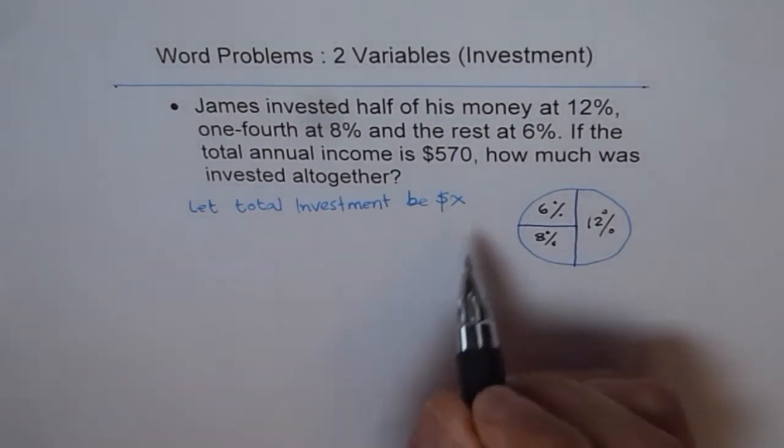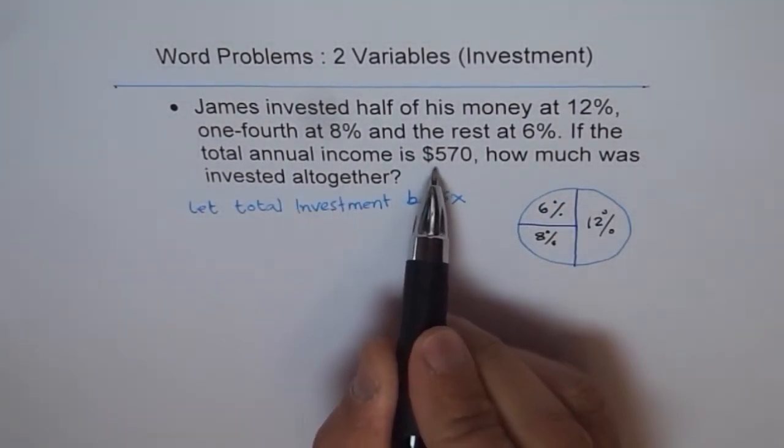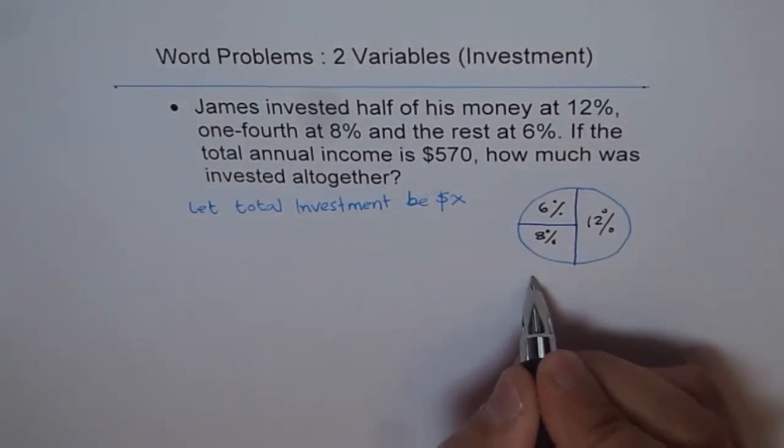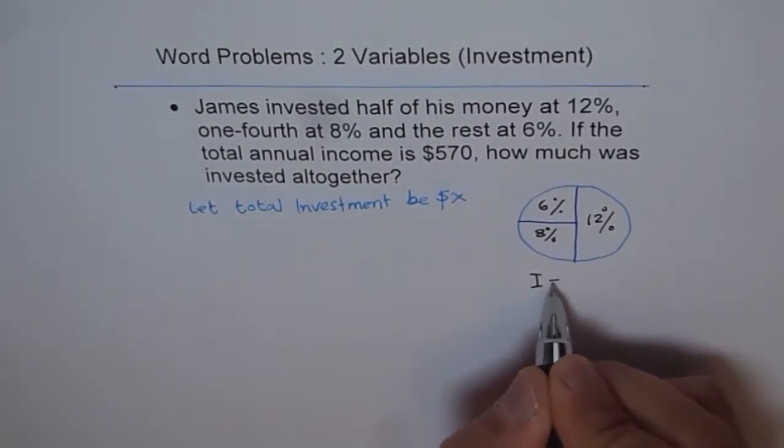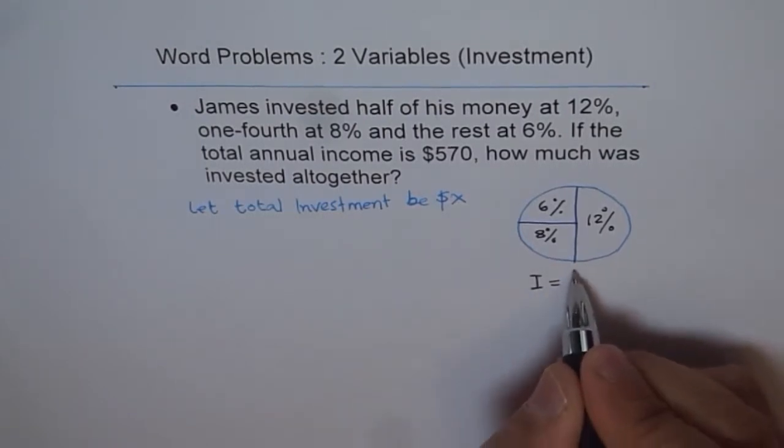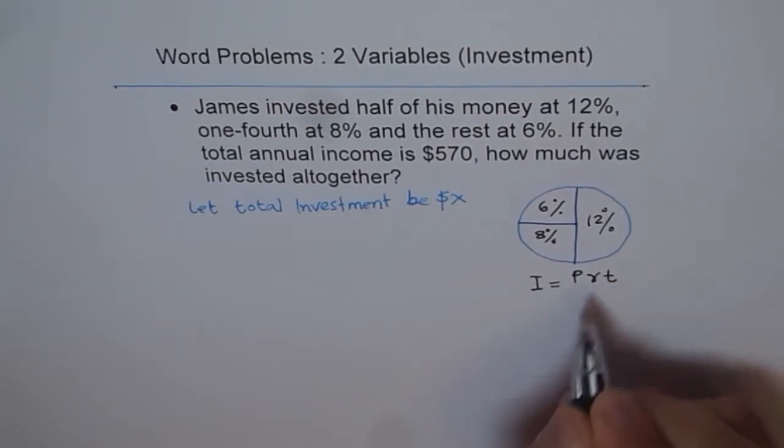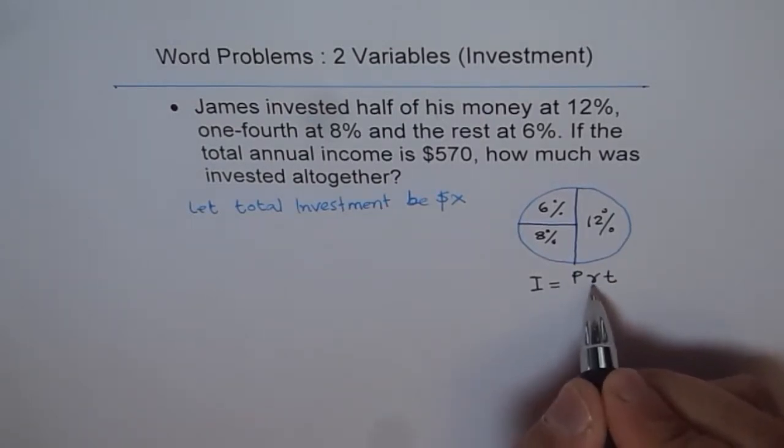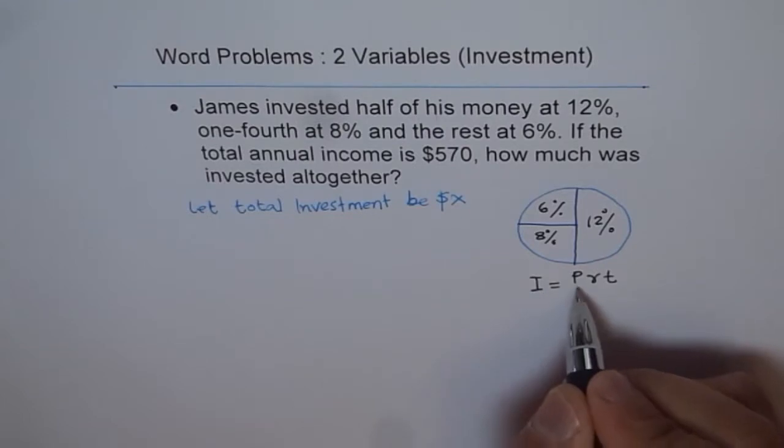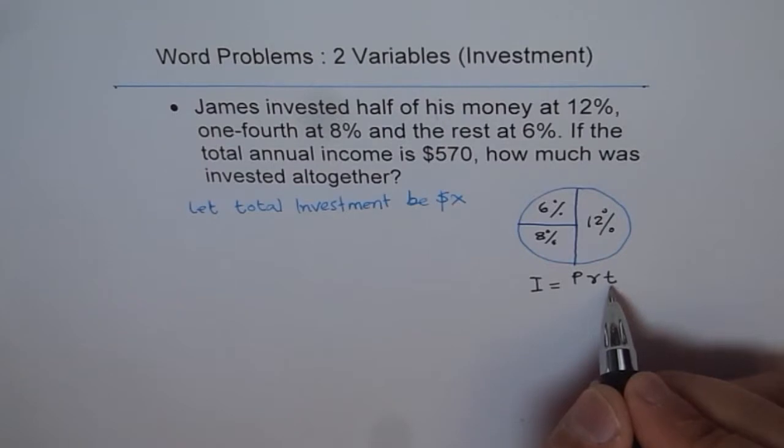And the annual income is $570. So when we say income here, we are actually talking about interest. Interest earned on investment. Interest is given by P times R times T. P is the principal amount invested, R is the rate of investment, and T is the time.